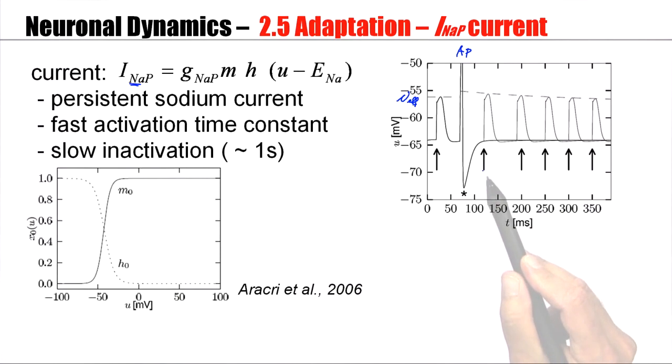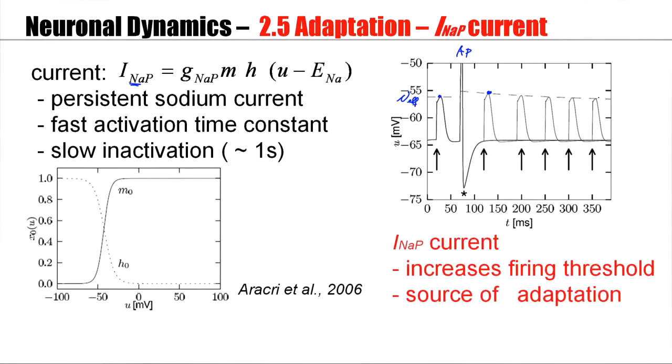Now, after the action potential, we adjust the current pulses, so that the amplitude is just not sufficient to generate a spike. And you see now that the voltage trajectory goes to a value which is higher than the maximal value here, which means that the effective firing threshold is increased.